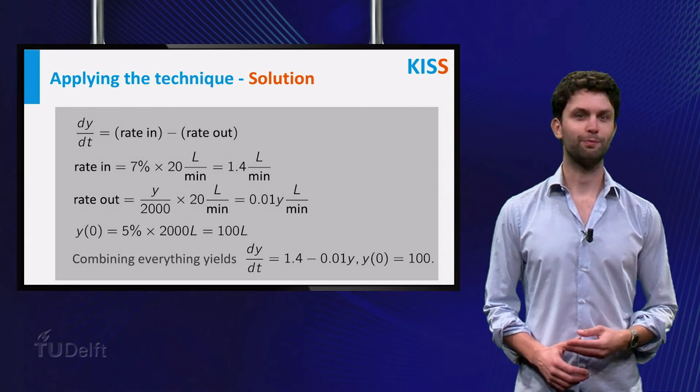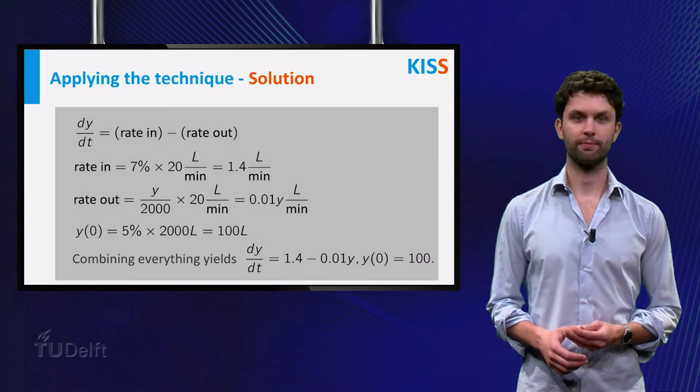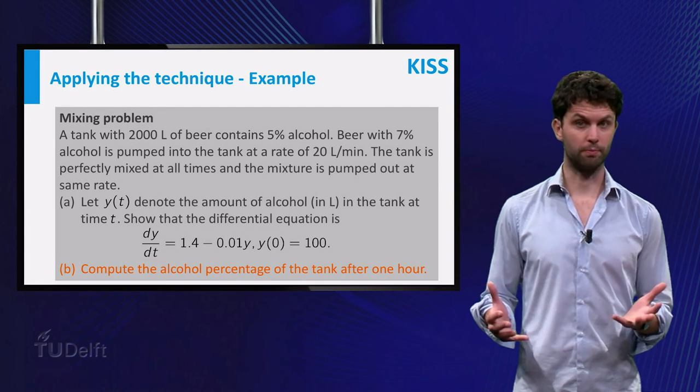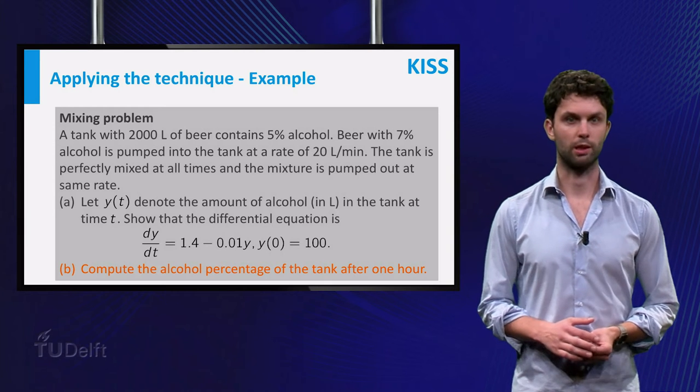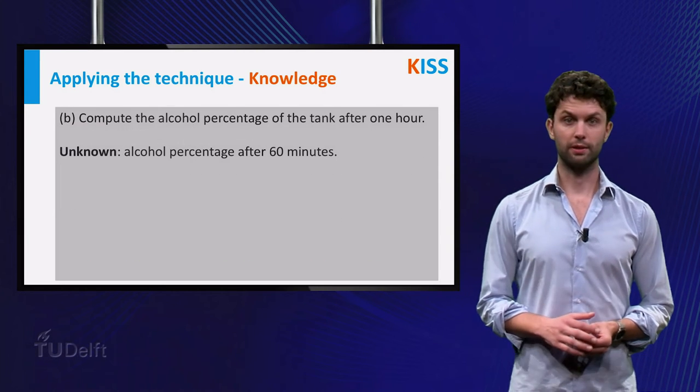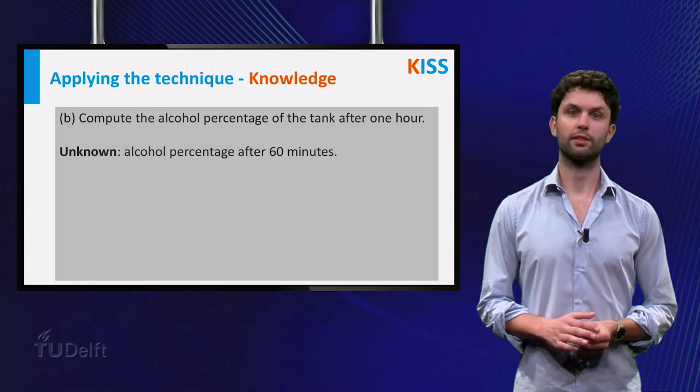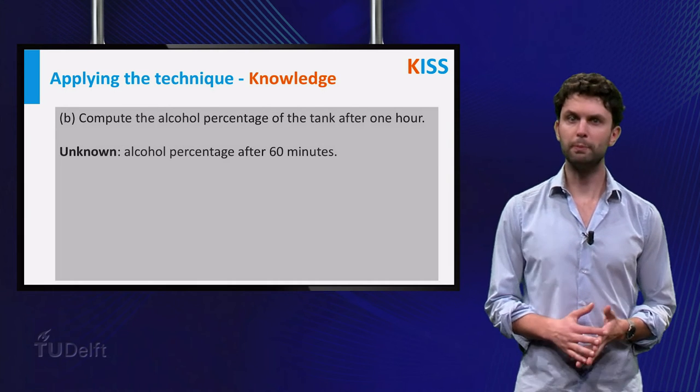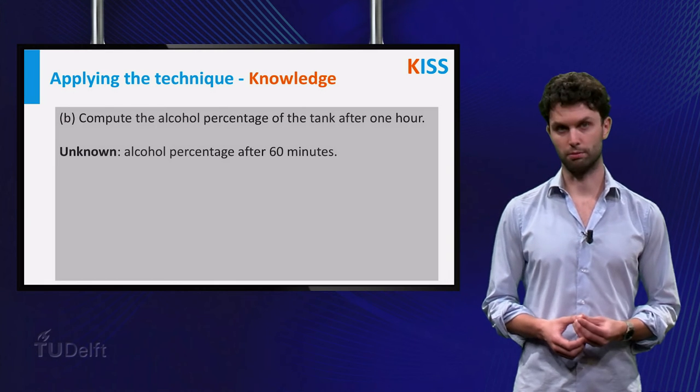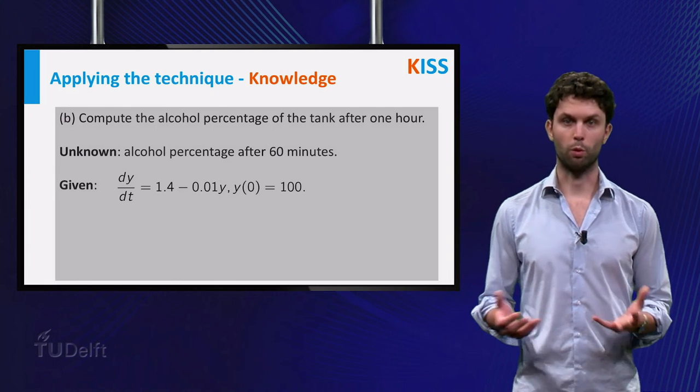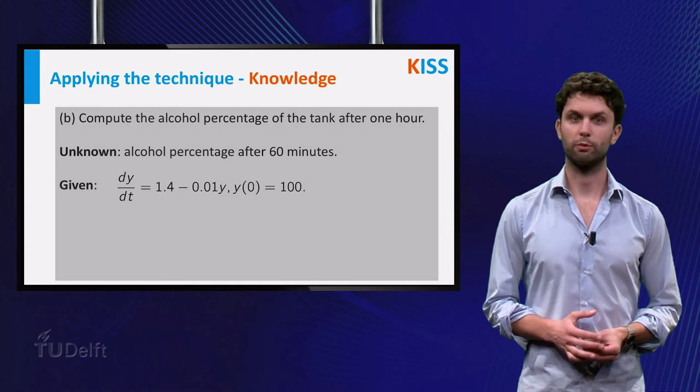Ok, this was part A of the question. Let's see how to use KISS for part B, where we have to compute the alcohol percentage after one hour. The unknown here is the alcohol percentage after 60 minutes. This might be obvious, but it is still good practice to focus on the unknown. Of course, we know the differential equation from part A.